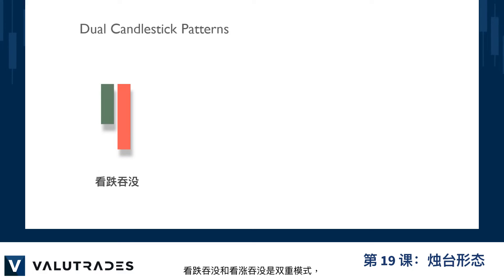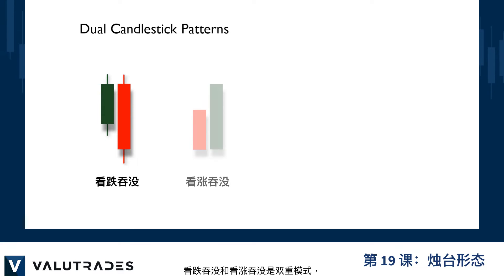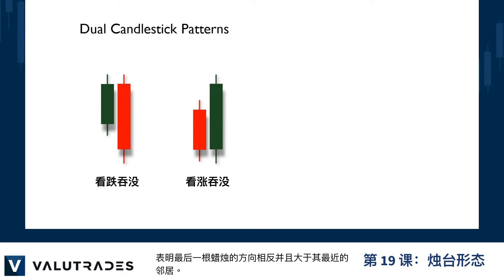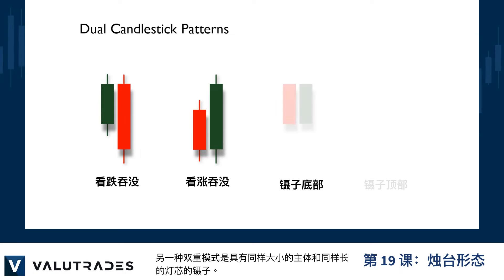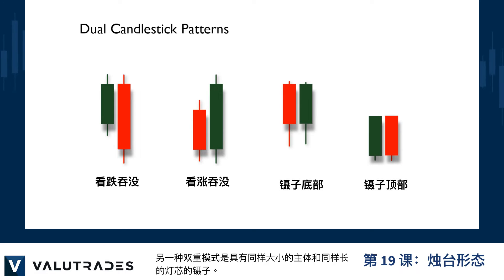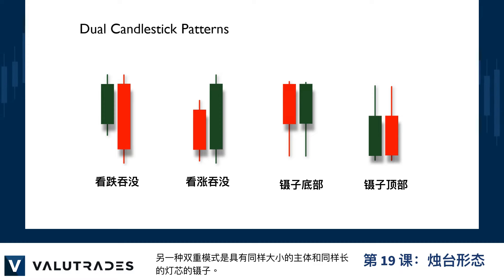Bearish engulfing and bullish engulfing are dual patterns indicating a reversal where the last candle is opposite in direction and larger than its nearest neighbor. Another dual pattern is tweezers, with equally sized bodies and equally long wicks.